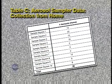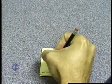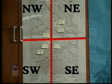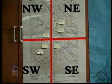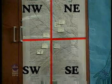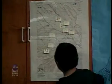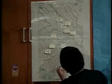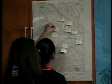Next, you'll write your address and the total number of aerosols from Table C on a self-adhesive note. Your teacher will divide a map of your community into four regions: Northeast, Northwest, Southeast, and Southwest. All students will place their labeled adhesive notes onto the map where they live. Using the data from the map, find the average for each region and make a class graph of the data.